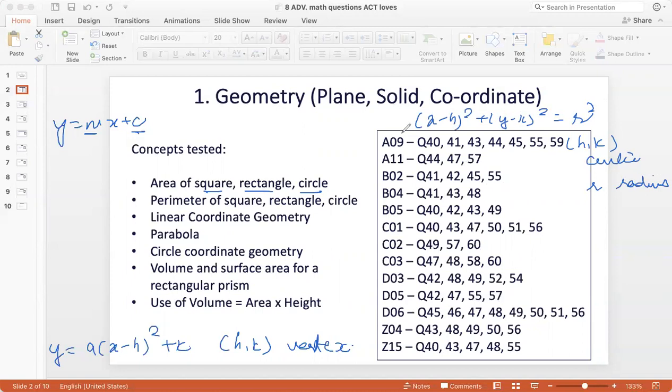Circle coordinate geometry uses the equation (x - h)² + (y - k)² = r² where (h, k) is the center of the circle and r is the radius. On the right, you see all the test numbers since 2018 and the questions which pertain to geometry. Each of these questions has been solved on the channel, so be sure to check those out. I will also link to topic-specific playlists in the description box.